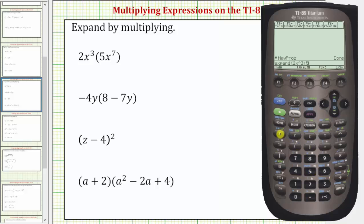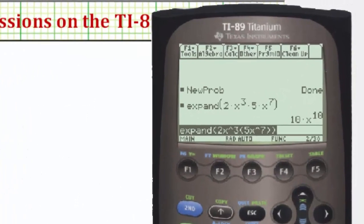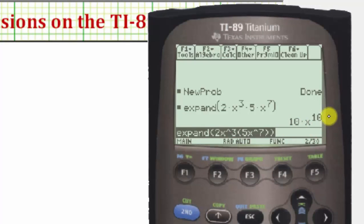open parenthesis, five x raised to the power of seven, close parenthesis. We need one more close parenthesis for the expand function, and then enter. The product is ten x to the tenth.